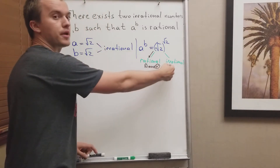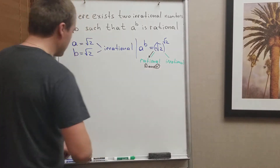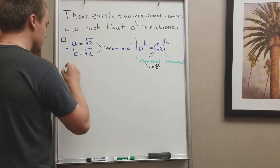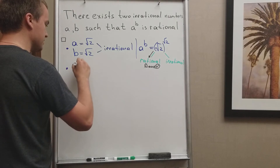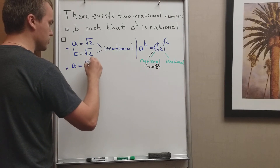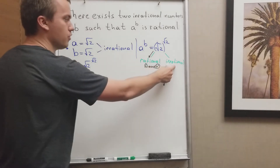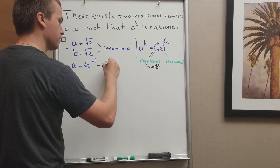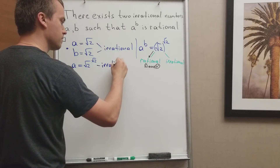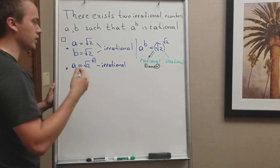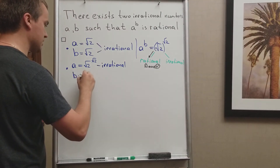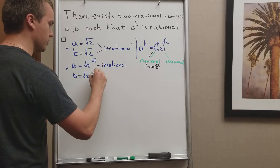But what if this number is going to be irrational? If the number is irrational, we're going to create a new pair of a and b. So let's make the new a to be equal to square root of 2 to the power of square root of 2. By this assumption, this a is irrational. And what we're going to take as b, we're going to take b as square root of 2, which is also irrational.